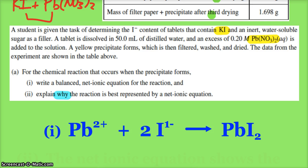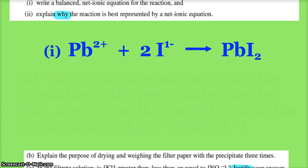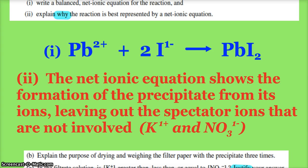Why is our reaction best represented by a net ionic equation? Any precipitate reactions, redox reactions, stuff like that—why do we want a net ionic? Because it shows us what's actually happening in the reaction. It shows the formation of the precipitate from the ions and it excludes our spectator ions. You wouldn't have to say K⁺ and NO₃⁻, but mentioning that the spectator ions are left out is probably a good idea.